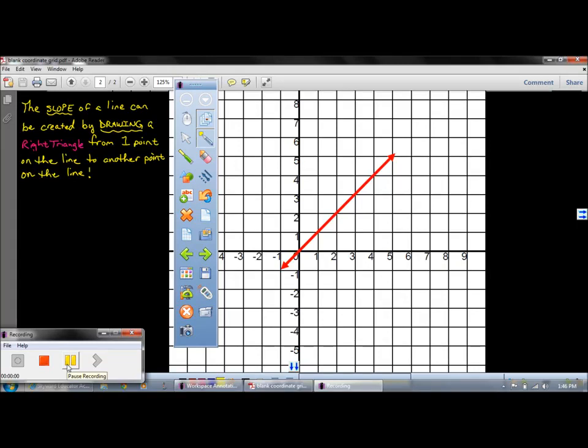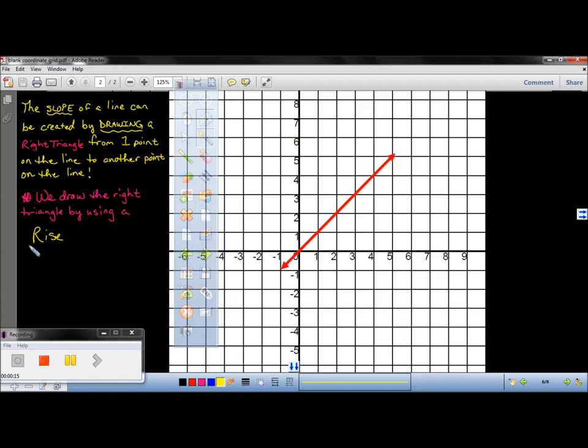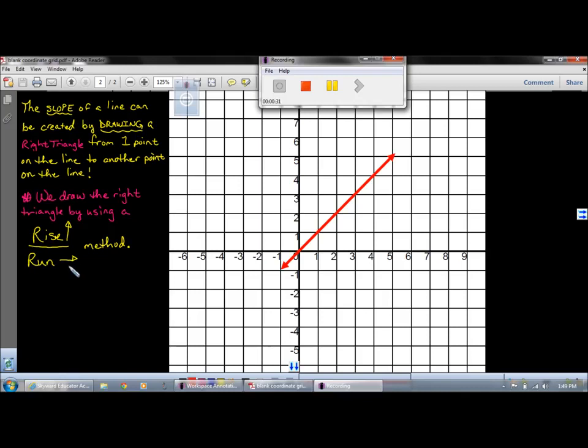The slope of a line can be created by drawing a right triangle from one point on the line to another point on the line. So let's take a look at what we have here. We draw the right triangle by using a particular method called the rise over run method. We're going to elaborate on this method, which will help us create similar right triangles to develop an understanding of what slope is.